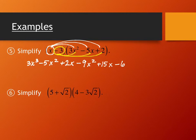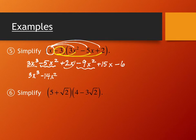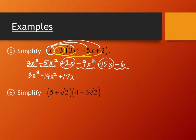Now combining like terms: 3x cubed stands alone. The x-squared terms are negative 5x squared and negative 9x squared — combining gives negative 14x squared. The x terms are 2x and 15x — that's 17x. The constant negative 6 stands alone. Final result: 3x cubed minus 14x squared plus 17x minus 6.